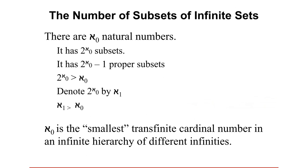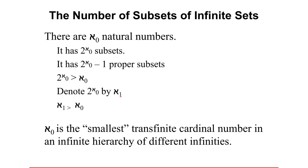As food for thought: the set of natural numbers is infinite — we cannot count it. If a number is uncountable, we say its cardinality is aleph-null (ℵ₀). Using our formula, the set of natural numbers has 2 to the aleph-null subsets, and 2 to the aleph-null minus 1 proper subsets. This 2 to the aleph-null is even greater than aleph-null itself, and we denote it ℵ₁. So ℵ₁ is greater than ℵ₀ — aleph-null is the smallest transfinite cardinal number in an infinite hierarchy of different infinities.